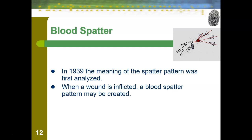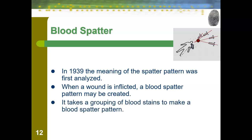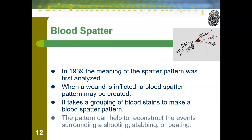So where do blood spatter patterns come from? They come when a wound is inflicted. Anytime someone bleeds, they have the potential to create a spatter pattern. It does take a grouping of blood stains to make a blood spatter pattern, and that pattern can help to reconstruct the events surrounding a shooting, stabbing, beating, or any other sort of event where someone may have bled.